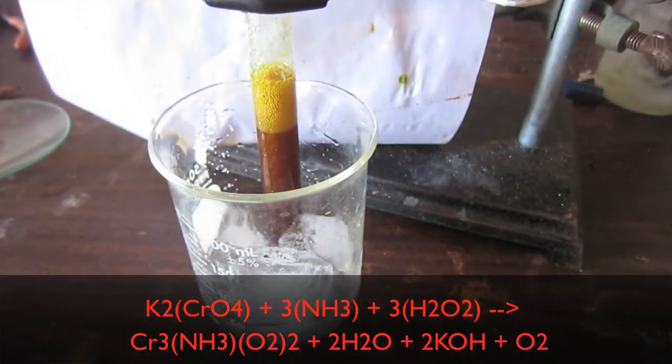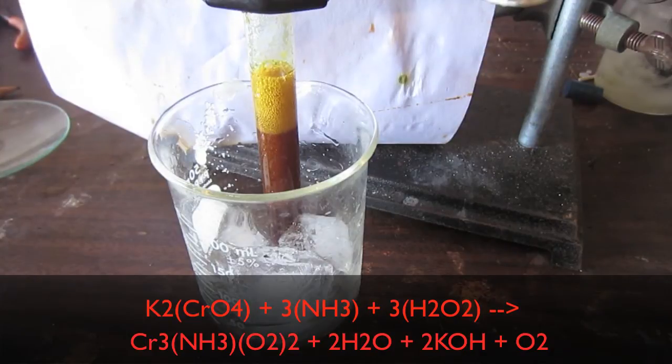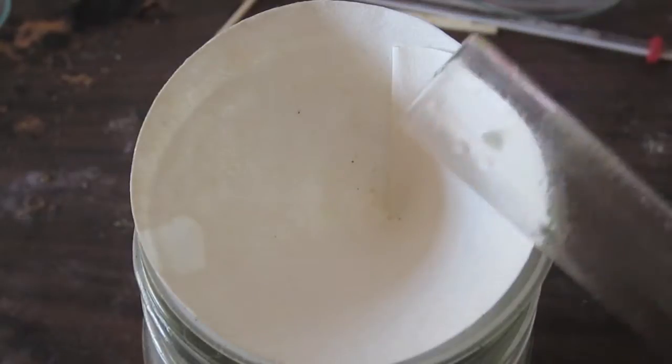You see that in solution, this compound makes a dirty brown solution, much like potassium tetraperoxochromate 5.